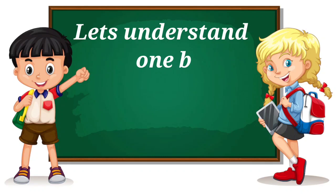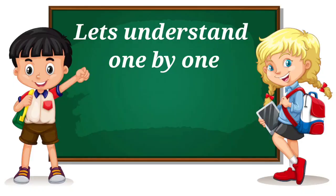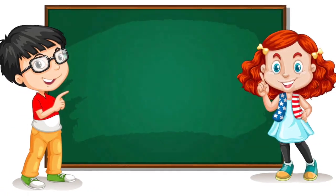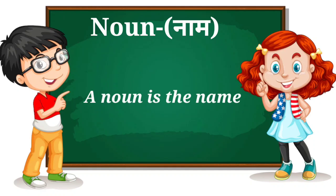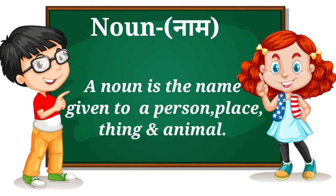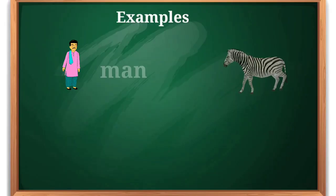Let's understand all these eight parts of speech one by one with definitions. The first one is noun — in Marathi it is called 'nam.' A noun is the name given to a person, place, thing, or animal. Examples are: man, zebra, ball, city, etc.